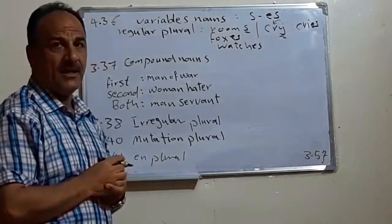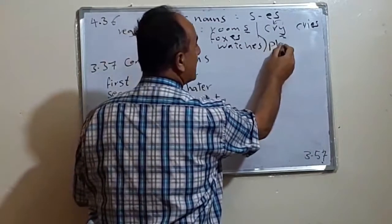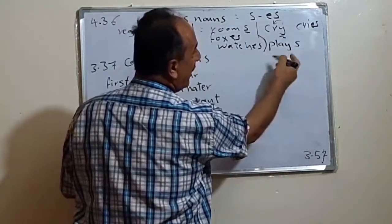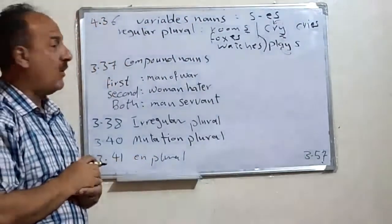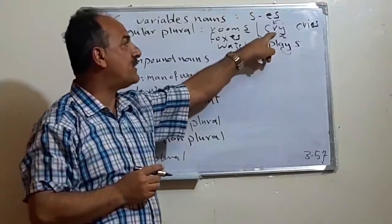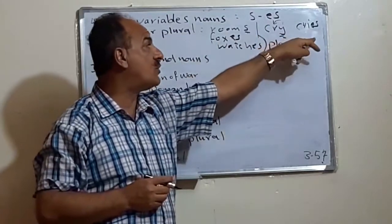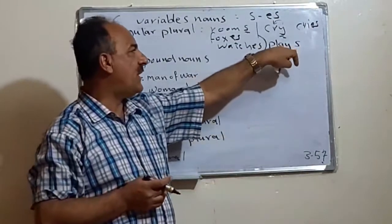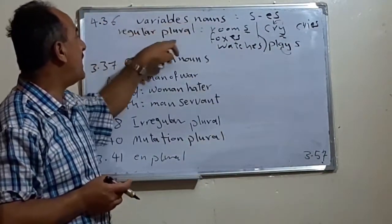But if it is preceded by vowel, we do not change. Like drama or play, we say just plays. We do not change this Y. Why? Because this Y is preceded by a vowel. Here it is preceded by consonant. That's why we change it into cries.